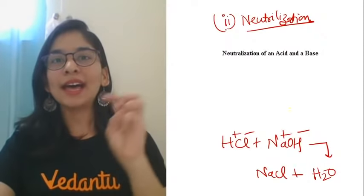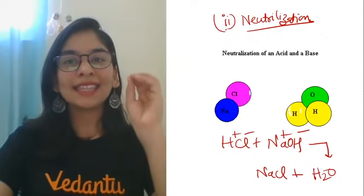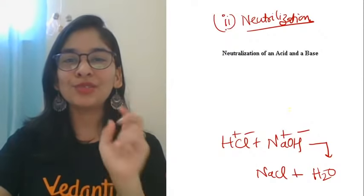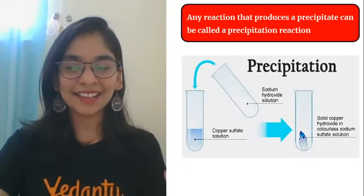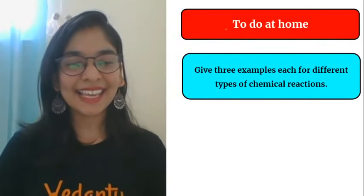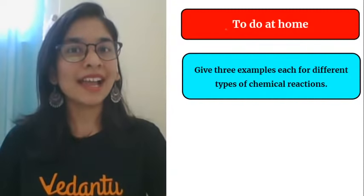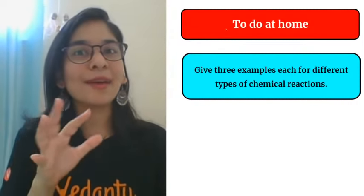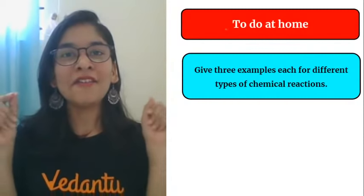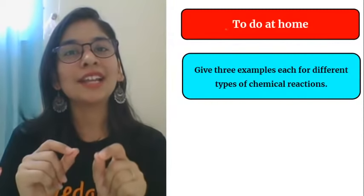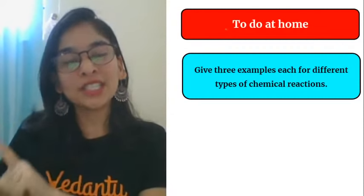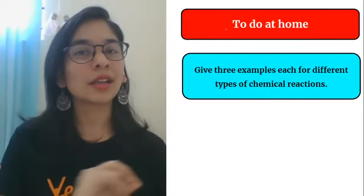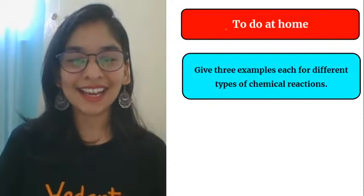So double decomposition (double displacement) reaction has two types: precipitation reaction and neutralization reaction. Are you able to understand? We have to continue this topic in the next session by talking about redox reactions — a very important session happening next week, so do not miss it. We will also talk about the applications of redox reactions.